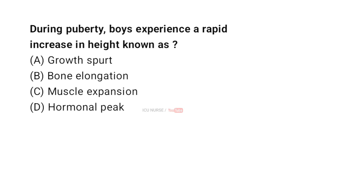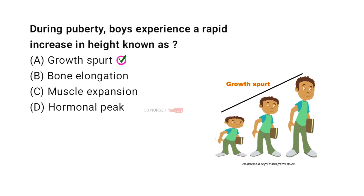What term describes the rapid increase in height during puberty? A: Growth spurt, B: Bone elongation, C: Muscle expansion, D: Hormonal peak. The correct answer is A: Growth spurt. During puberty, boys go through a phase called a growth spurt where their height increases rapidly in a short period, because their bodies produce more growth hormone, which helps bones and muscles grow faster.